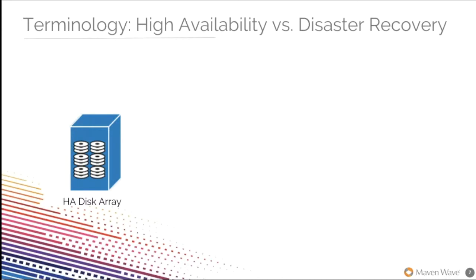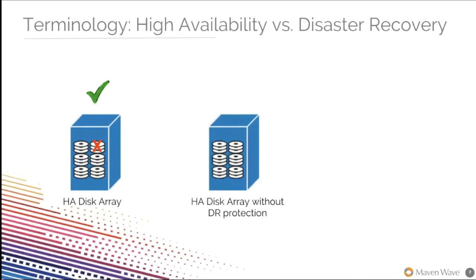HA helps ensure an agreed-upon level of operational performance — usually uptime — for a higher than normal period. However, it doesn't guarantee that you're prepared for a service interruption. For example, with a standalone highly available disk array, if a single disk fails, the array and its data remain available — just like the run-flat tire. But consider the same array without warm or hot replication to a secondary site: if an unexpected service interruption occurs and the entire array goes down, the array and its data are no longer available to you or your customers.